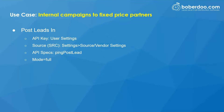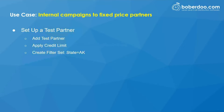The steps to recap again: post leads in — make sure you use the API key, source, and posting specs. Set up a test partner, make sure to apply a credit limit, and create a filter set that is fairly unique, something like state being Alaska only.